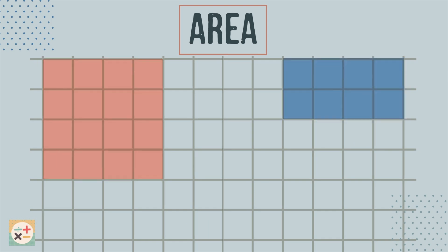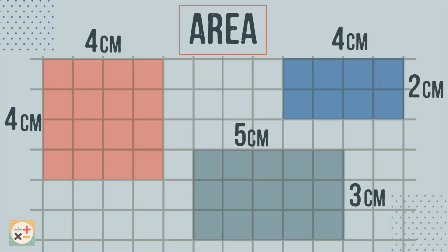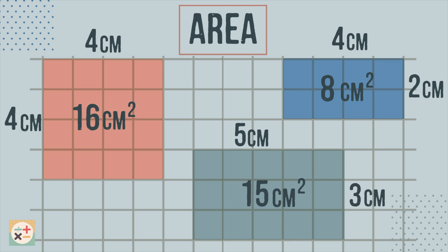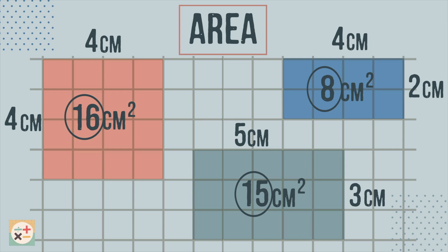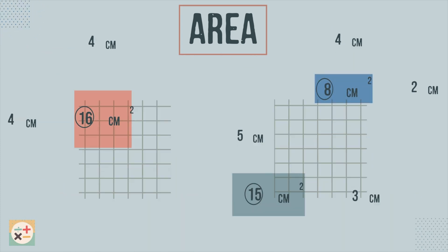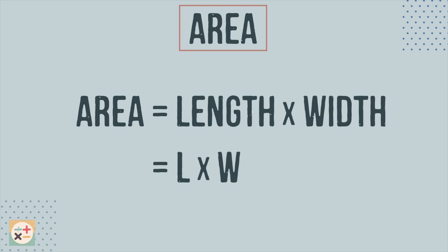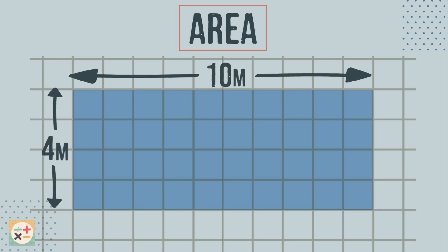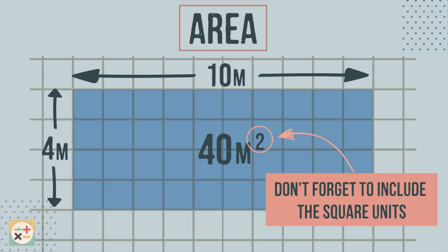Let's have a look at these rectangles. We have labeled the length and width as well as the area of each one. Is there anything you notice? Well, the area can be calculated by multiplying the length of a side by the width. Therefore, the formula for finding the area of a square or rectangle is length times width. This rectangle has a length of 10 meters and a width of 4 meters. If we multiply the length times the width, we get 40 square meters. Don't forget to include the squared units when noting down an area.